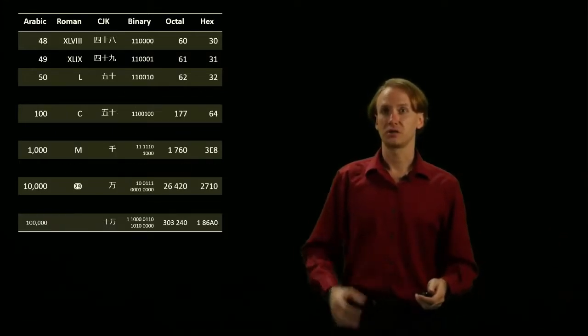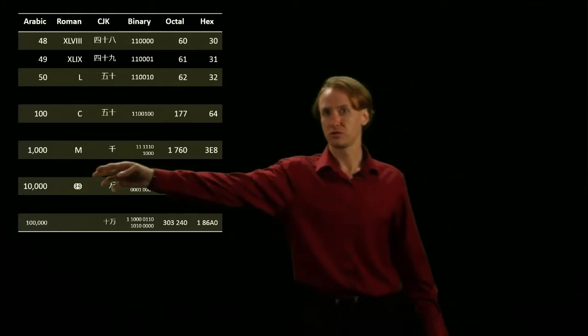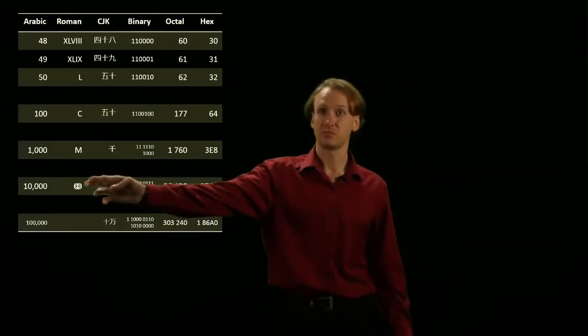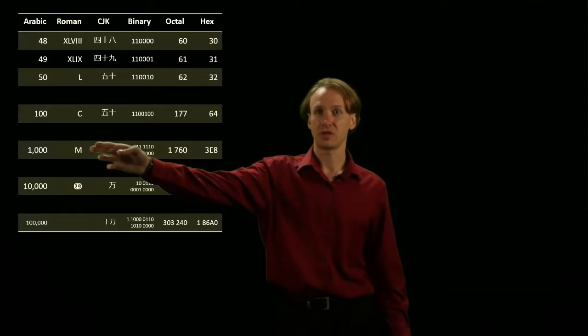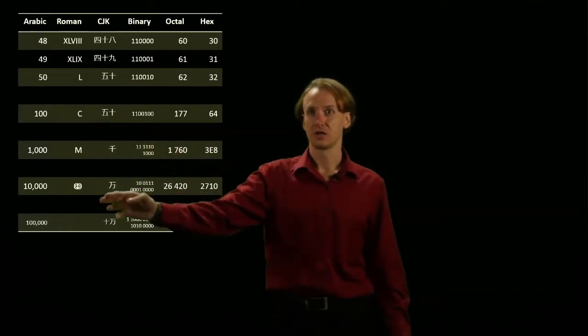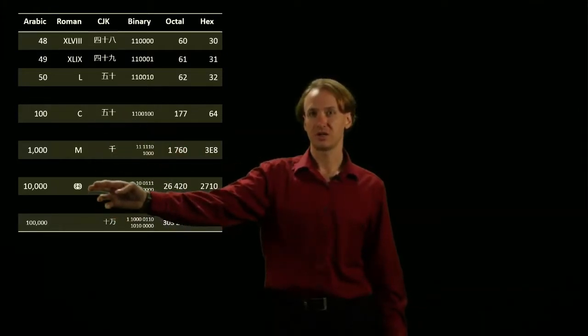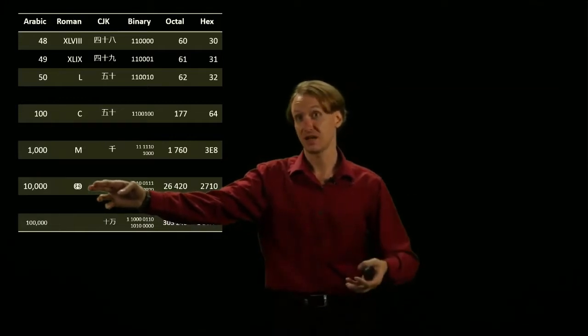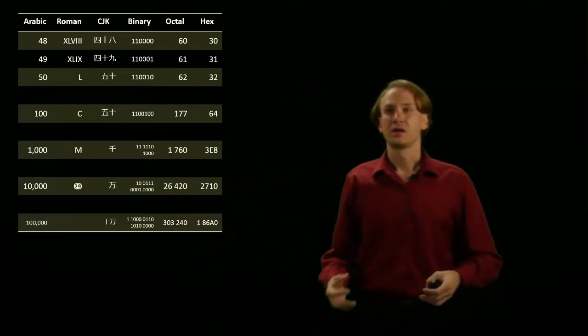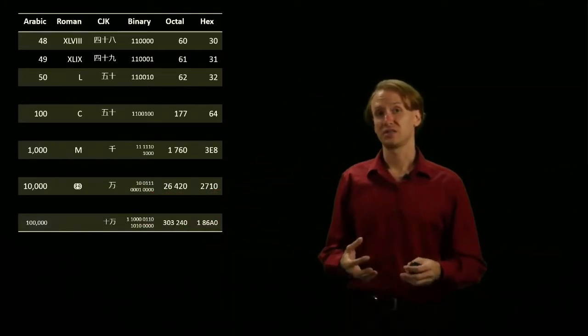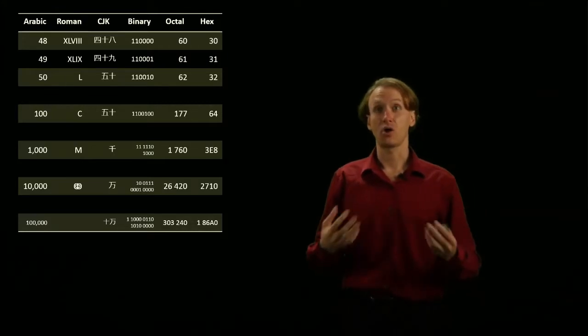So if I'm looking at large Roman numerals, you'll notice I have some really odd symbols. You start getting M for 1,000, C for 100, this weird combination of C's and D's inside themselves. And all of that gives us some really nice idea about how large our number is.